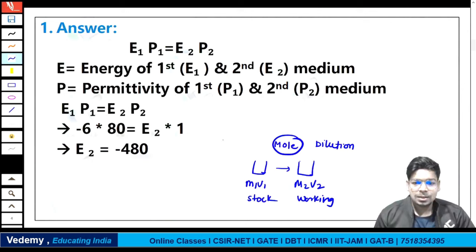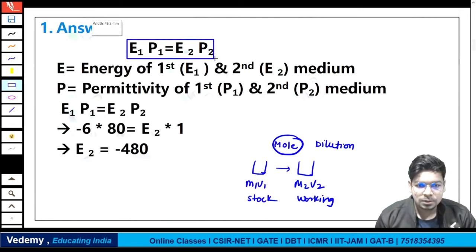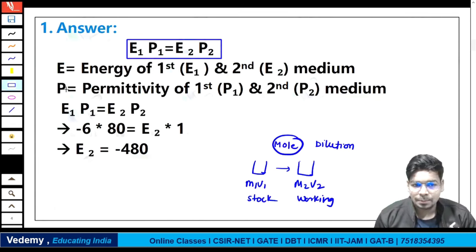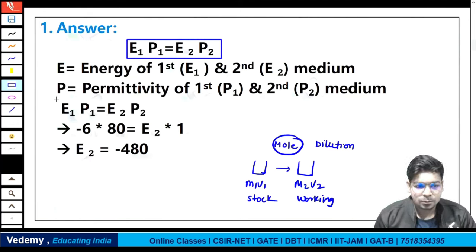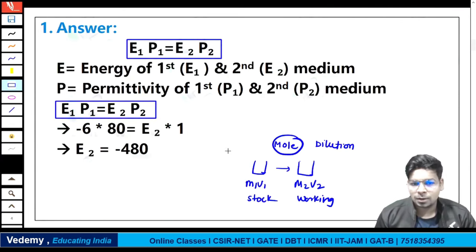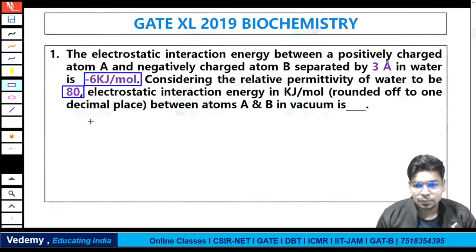Exactly, in the case of permittivity — permittivity and energy work on this same kind of phenomenon. The formula is E1 × P1 = E2 × P2, where E is energy and P is permittivity of the first and second medium. E1P1 = E2P2 — remember this formula; it is very similar to the stock and working concept.